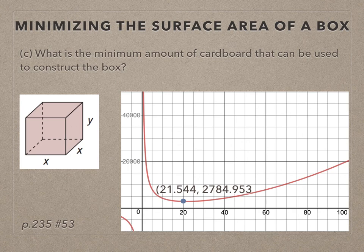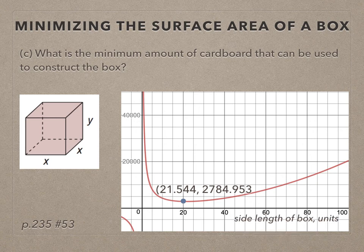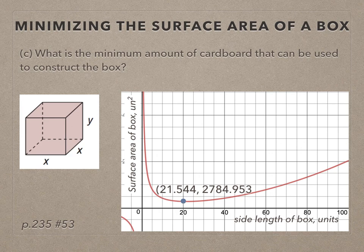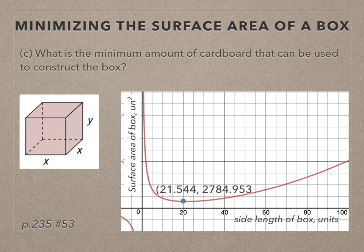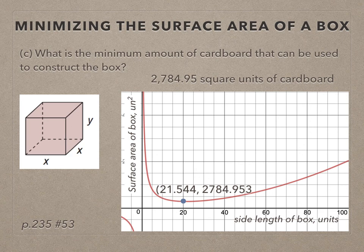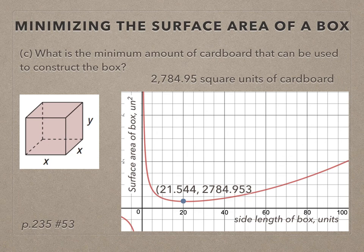Before I answer the question, I have to know which of these coordinates, x or y, can answer the question. What was x measuring? That was the side length of the box in units. The second coordinate, which is what's being measured, is the surface area of the box in square units. So the question, what is the minimum amount of cardboard? That's going to be my second coordinate in my ordered pair. 2,784.95 square units of cardboard is the smallest amount of cardboard I can use to make a box with 10,000 cubic units in volume.